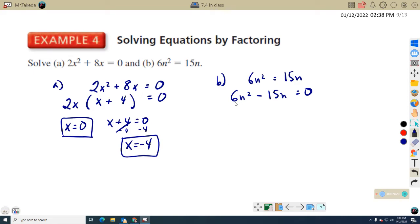Now I can factor out greatest common factor between 6N squared and 15N. So that would be, this is 6 is 3 times 2. 15 is 3 times 5. So 3. And then for N squared and N, the one with a smaller exponent, N. So that's going to leave me 6 divided by 3 is 2. N squared divided by N is N. And then 15 divided by 3 is 5. And N divided by N is zero.